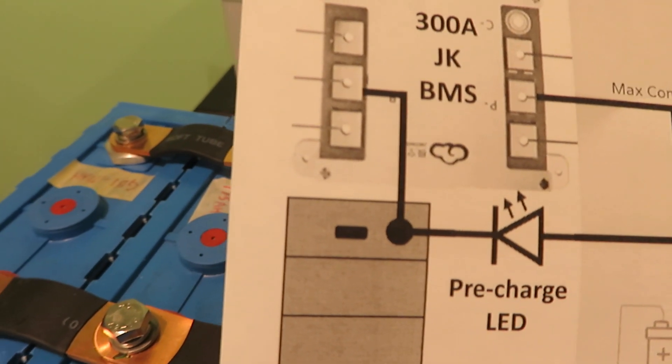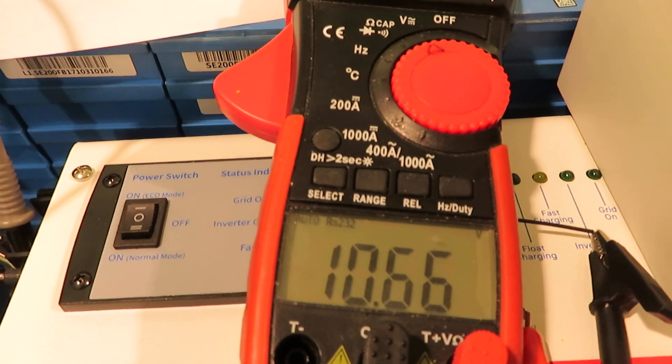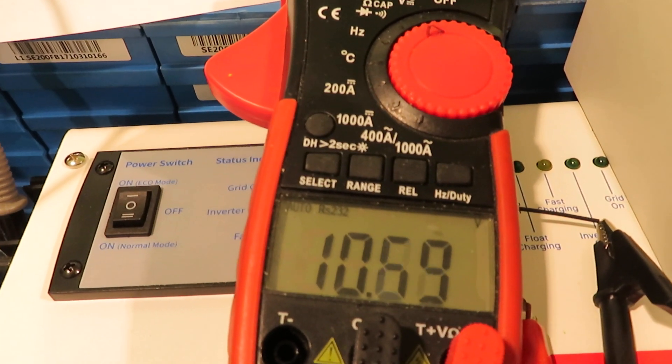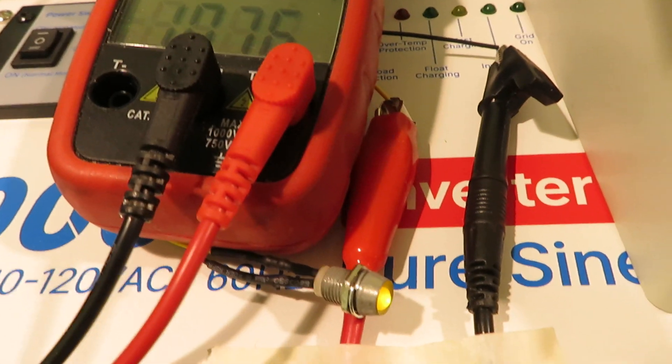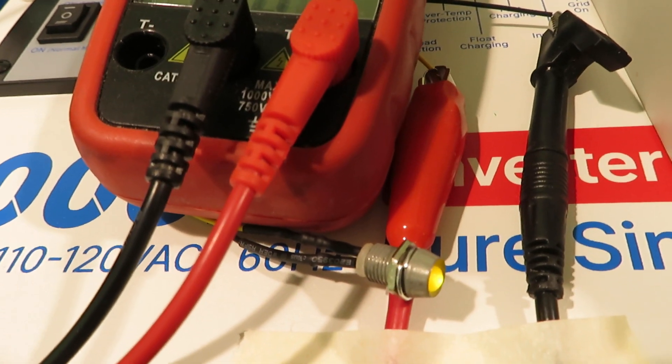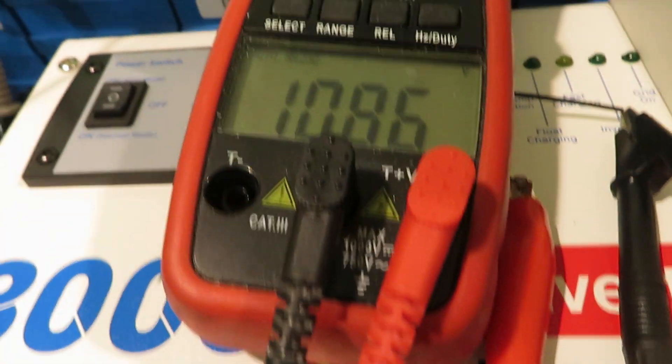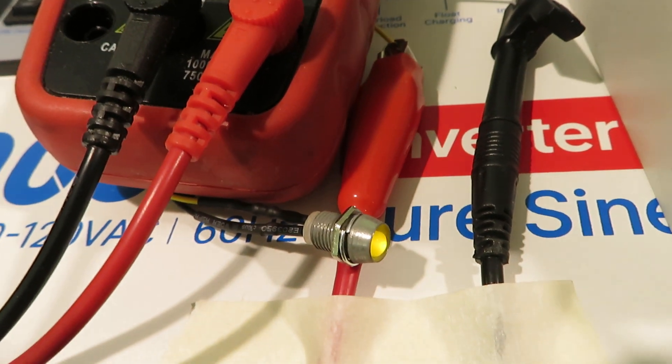Right now the voltage is climbing to 10.7 volts and the LED is dimming. As soon as the voltage goes up to 12 volts, the LED will shut off itself. Let me shut down the charging, disconnecting the battery.